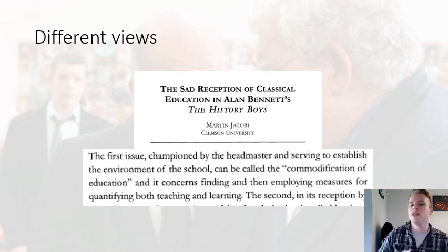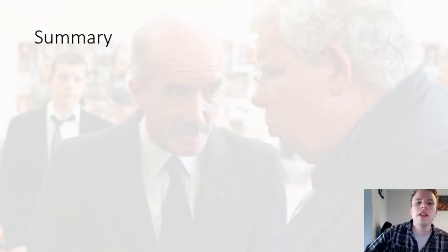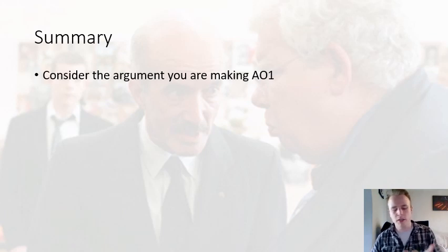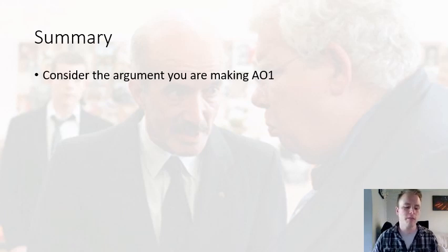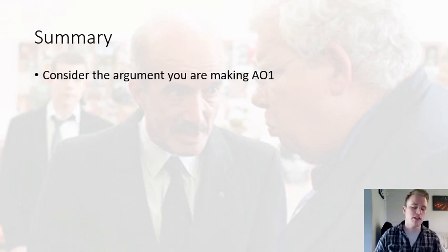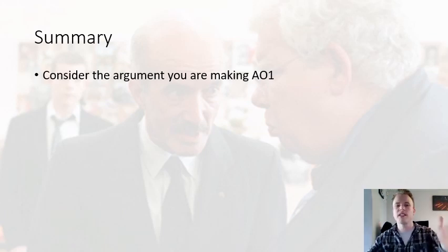Just to summarize and give you a bit of work to go on: you need to consider what argument you're making. It would depend on the question, but the main point with the headmaster is that he is concerned with reputation and the commodification of education — and this is dangerous. You can adapt that to the abuse question: it leads to an abuse of students. But you want to set out that line of argument before you jump into any evidence — that's got to come first.